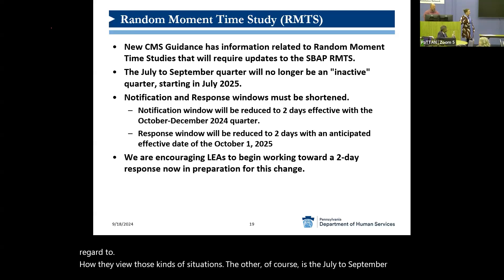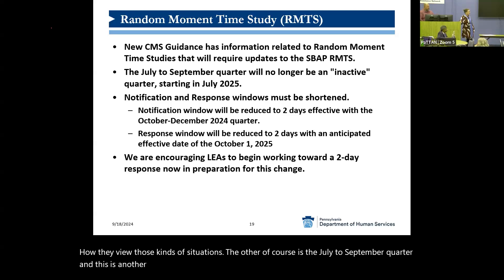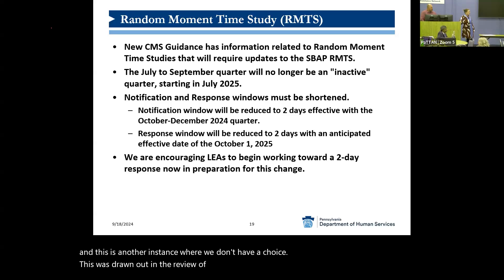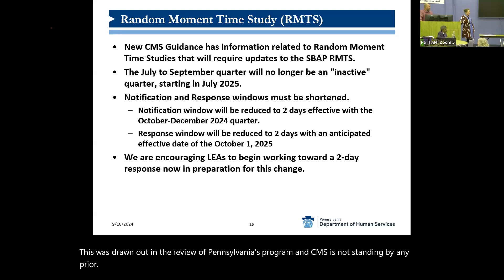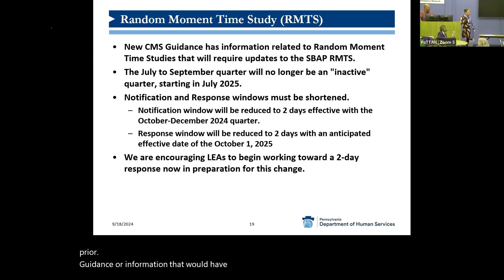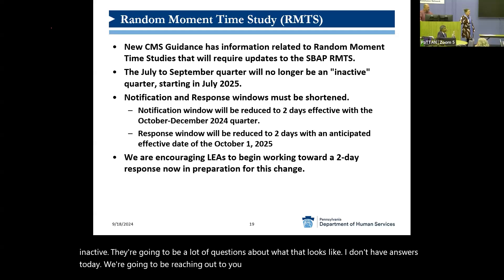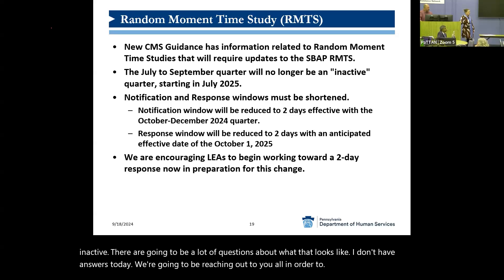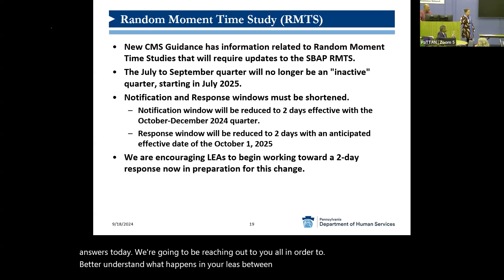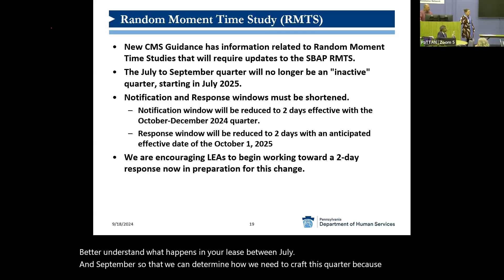The other change is the July to September quarter. This is another instance where we don't have a choice — it was drawn out in the review of Pennsylvania's program, and CMS is not standing by any prior guidance that would have suggested we could keep July to September as inactive. There are going to be a lot of questions about what that looks like. We're going to be reaching out to all of you to better understand what happens in your LEAs between July and September so that we can determine how to craft this quarter, because unfortunately we're not going to escape it.